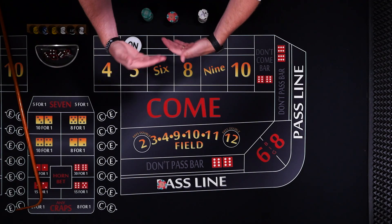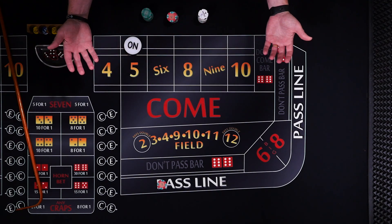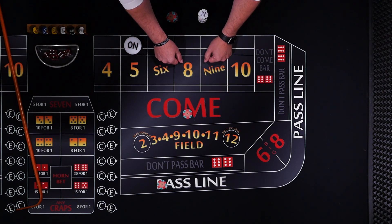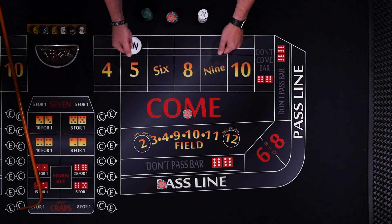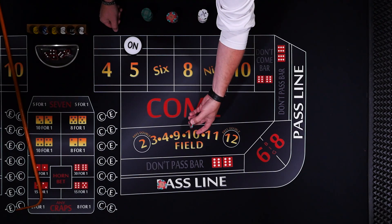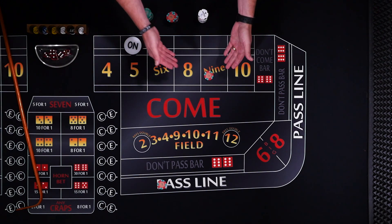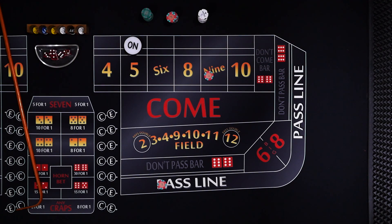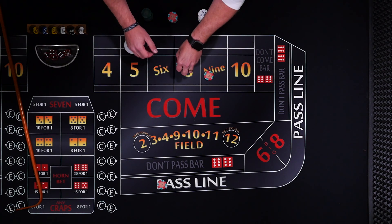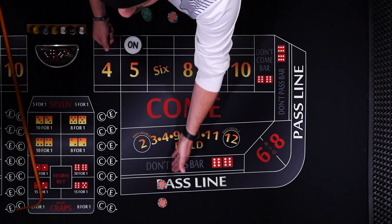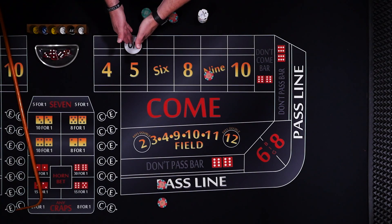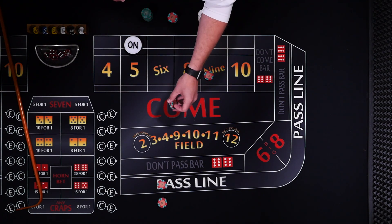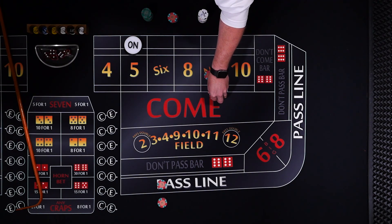The come bet works exactly the same, but it's in the middle of the game when the puck is already on — I think of it as a game within a game. If you make a bet in the come, the first roll acts the same: 7 or 11 you win, 2, 3, or 12 you lose. Any other number becomes the new point for the come bet. Let's say a 9 rolls — it would travel to the 9. A roll of 9 wins, a roll of 7 loses. The great thing about these bets is you can make an odds bet behind the line, betting additional money on your number. You can give your odds money to the dealer and he'll place it up on your number.